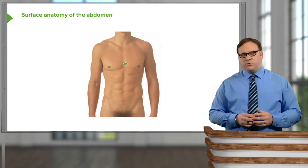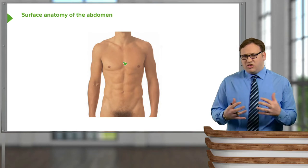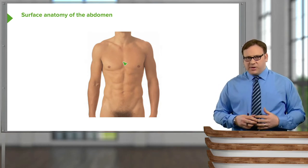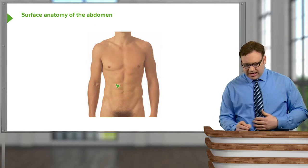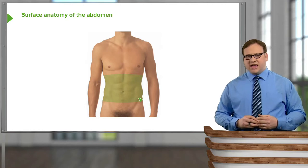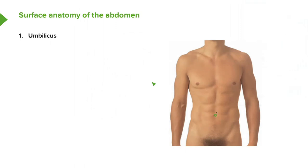If we have a close-up view of the abdomen, we can see there are numerous features which we can observe just on the surface, without going into the abdominal cavity itself. We can see we have the umbilicus in the midline, and then radiating superior and inferiorly away from the umbilicus, we have the linea alba. This separates the abdomen into left and right sides.